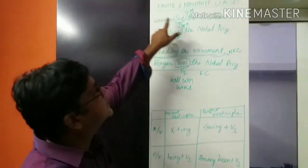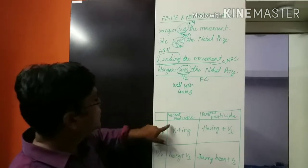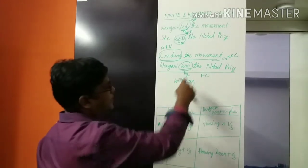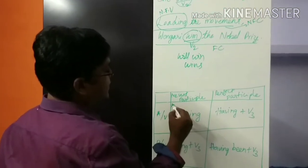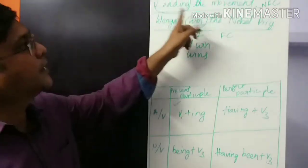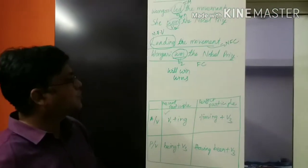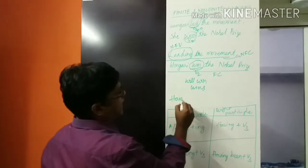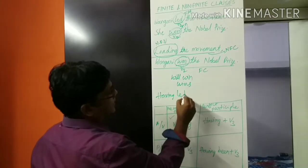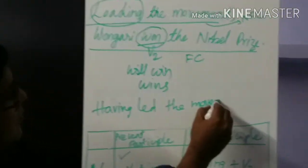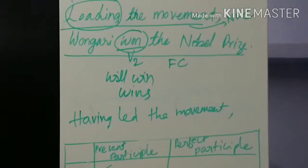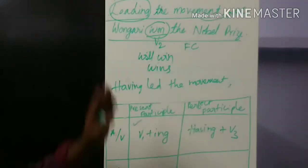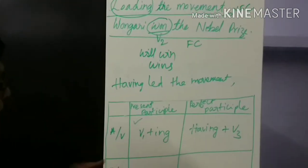This sentence is in active voice. Present participle: 'Leading the movement, Wangari won the Nobel Prize.' If you want to write it in perfect participle: 'Having led the movement, Wangari won the Nobel Prize.'